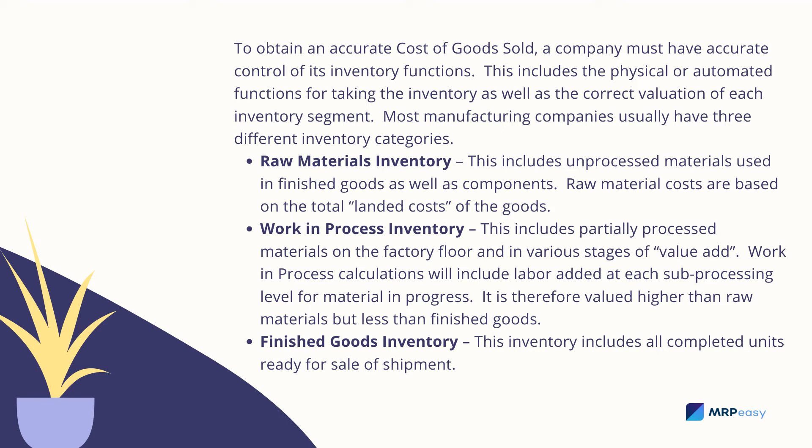Most manufacturing companies usually have three different inventory categories. Raw Materials Inventory includes unprocessed materials used in finished goods, as well as components. Raw material costs are based on the total landed costs of the goods. Work-in-Progress Inventory includes partially processed materials on the factory floor in various stages of value-add. Work-in-progress calculations will include labor added at each sub-processing level and are therefore valued higher than raw materials, but less than finished goods.